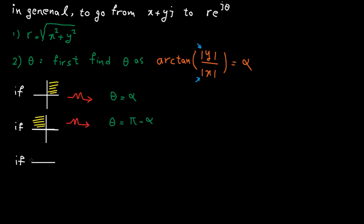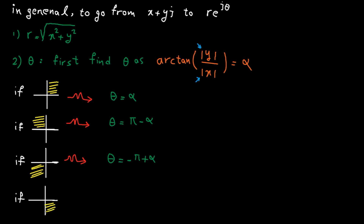If it's in the third quadrant — i.e. x negative, y negative — the angle is minus pi plus alpha. And finally, if it's in the fourth quadrant — i.e. x positive, y negative — the angle is minus alpha.